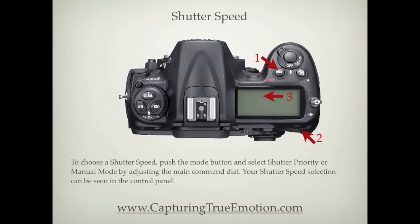To choose a shutter speed, push the mode button and select shutter priority or manual mode by adjusting the main command dial. Your shutter speed selection can be seen in the control panel.